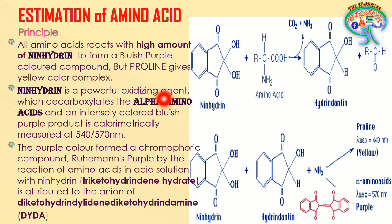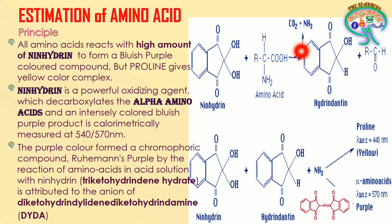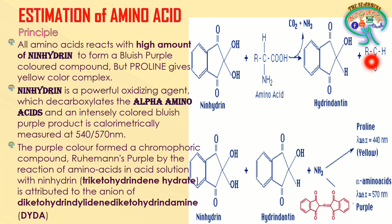Ninhydrin acts as an oxidizing agent. When it oxidizes the amino acid, it decarboxylates the alpha amino acid, intensely creating a bluish-purple color product. In the reaction, ninhydrin reacts with the amino acid, which liberates carbon dioxide. Upon decarboxylation, a new compound called hydrindantene is formed, and the amino acid is oxidized to give an aldehyde.